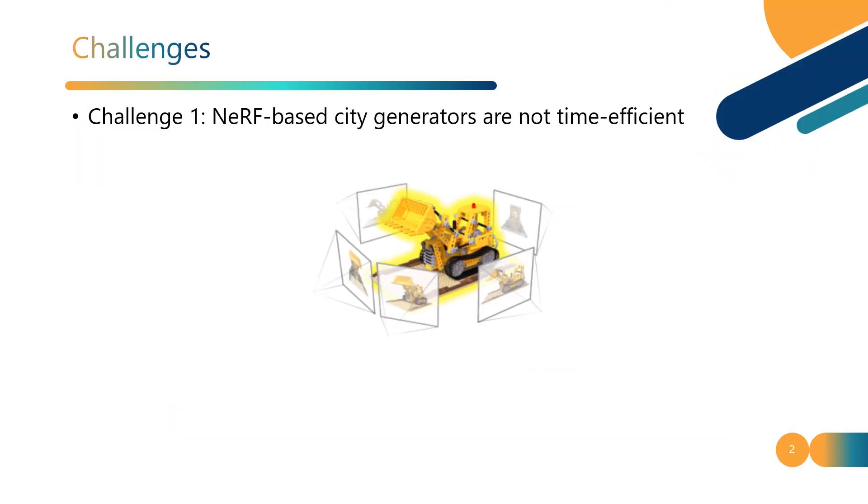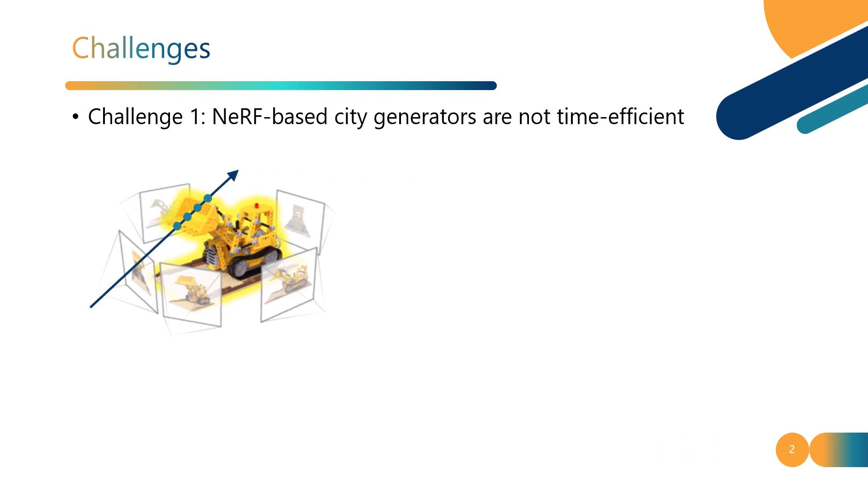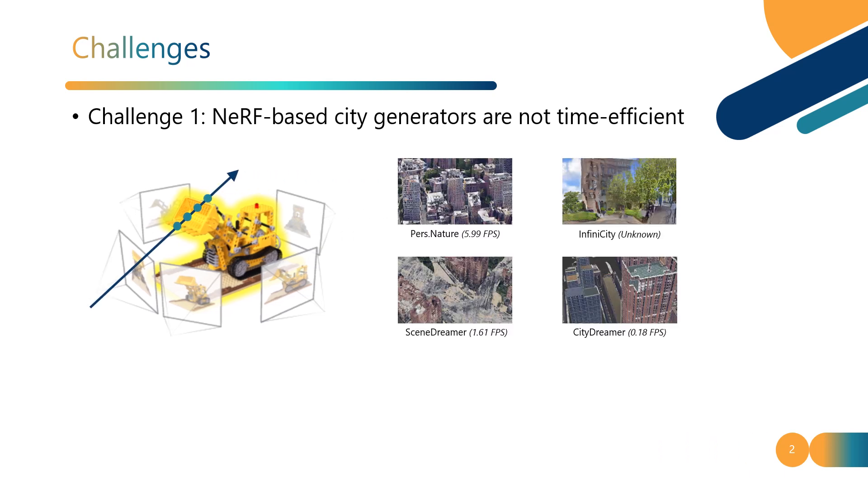3D city generation with NERF-based methods shows promising generation results. However, NERF samples points along rays traced from the camera center through each pixel, rendering these methods computationally inefficient.